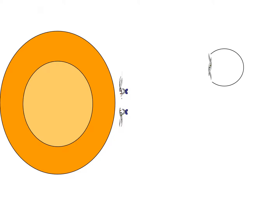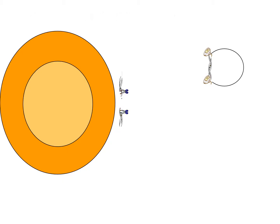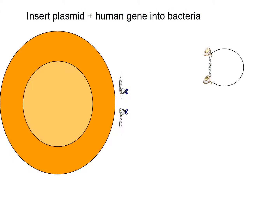In order to make sure that the gene sticks in, you have to use another kind of enzyme to stick the gene into the plasmid. Once that's done, the plasmid can now be taken up by the bacteria.